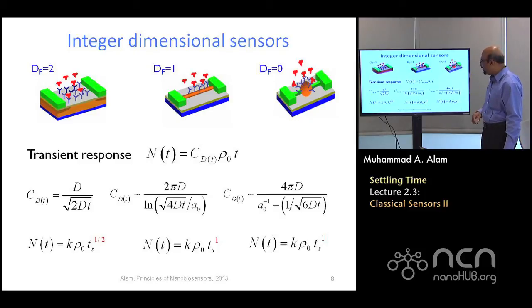However, for the nanosphere sensors with a fractal dimension of zero, you see that as time progresses, 1 over 6 square root of delta t, this will become smaller and smaller, and over a time then, therefore, this will simply flip over, and that will become a constant. Rho naught t will get multiplied, and so, therefore, both a nanowire sensor and a nanosphere sensor have same dependencies.